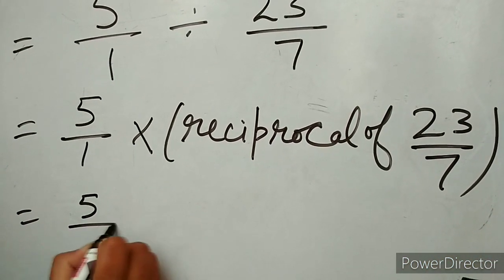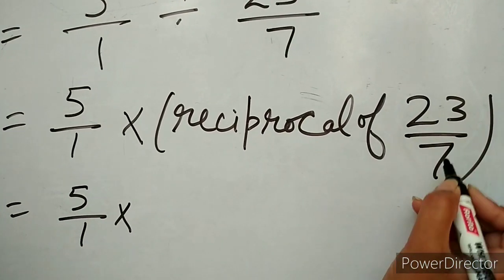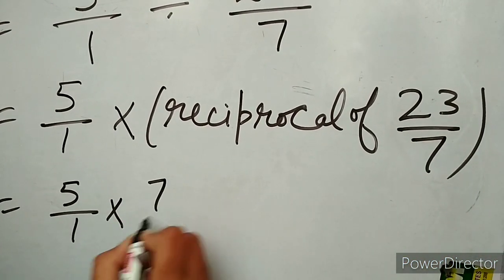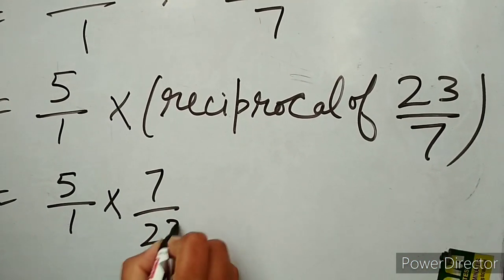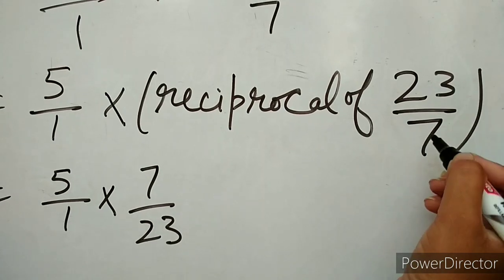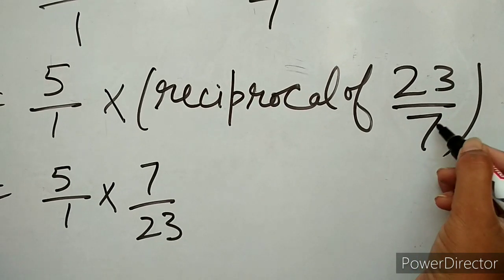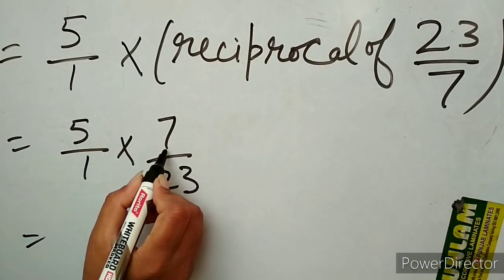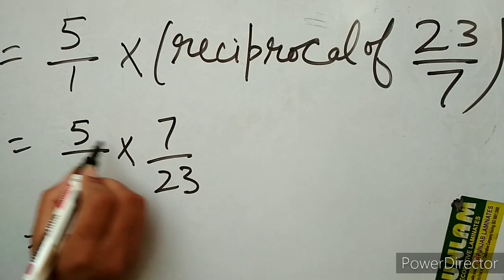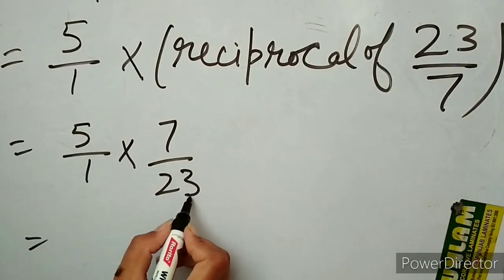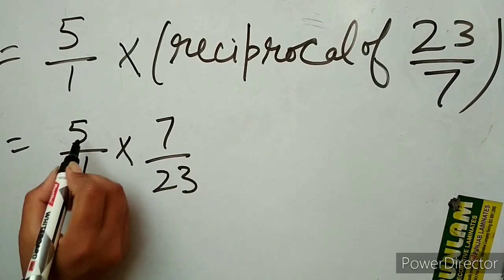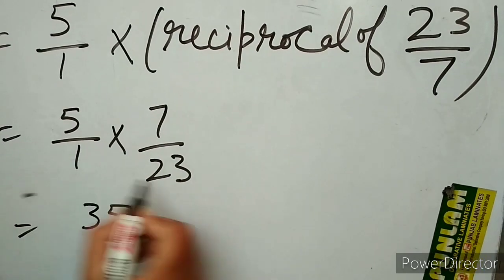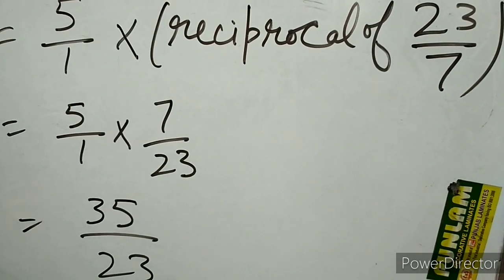The reciprocal of 23 upon 7 is 7 upon 23 — we simply interchange the numerator and denominator. Now multiply numerator by numerator and denominator by denominator: 5 multiplied by 7 gives 35, and 1 multiplied by 23 gives 23. So the answer is 35 upon 23.